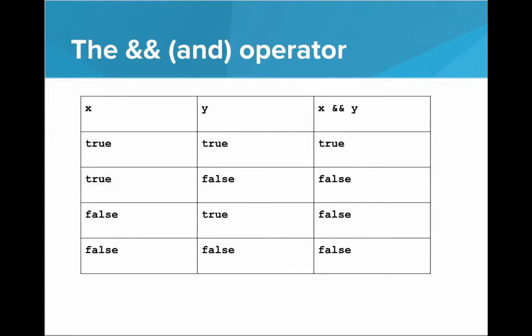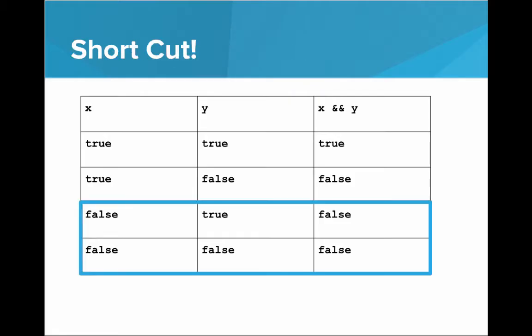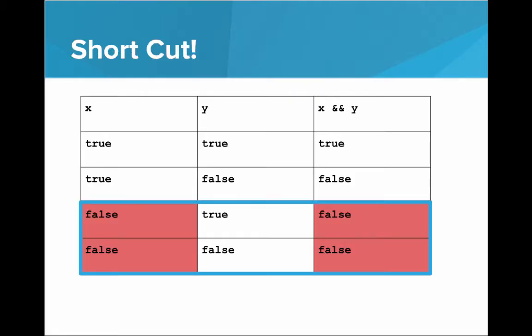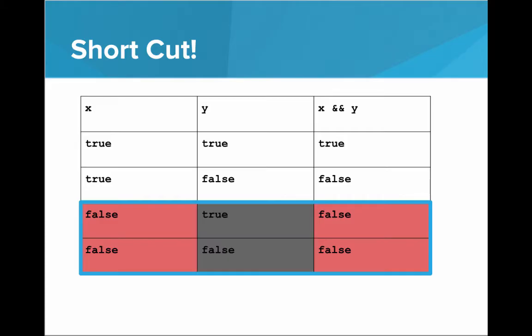Remember that 'and' works as follows. If we're evaluating x and y, we have to look at both x and y to determine if x and y is true or false. The only way for 'and' to be true is if both x and y are true. If one of the inputs is false, it will end up being false. So while computing 'and', we see there's a shortcut: if the first input is false, then the entire statement will be false. We don't even have to look at y — false and anything is equal to false.